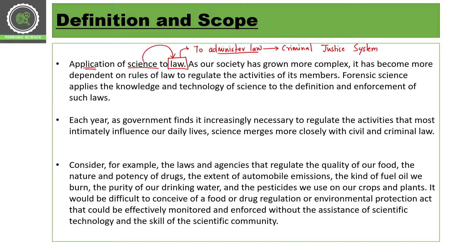Our society has grown more complex and keeps getting more and more complex. It has become more dependent on rules of law to regulate the activities of its members. We are all members of our society, and as society grows more complex, we are clearly dependent on rules to regulate our activities. This is where forensic science becomes important.